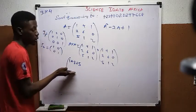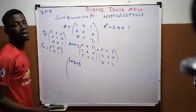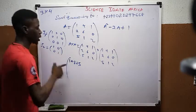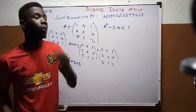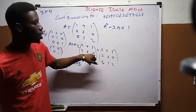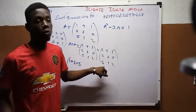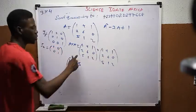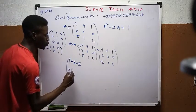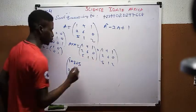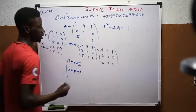For row 2, column 1: pick elements from row 2 of the first matrix and column 1 of the second. So: 2×1 = 2, plus 6×2 = 12, plus 0×5 = 0.